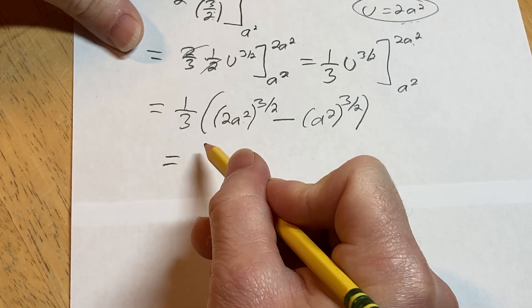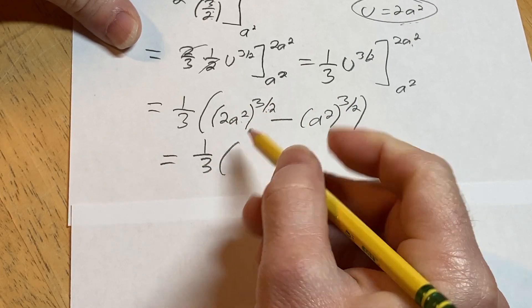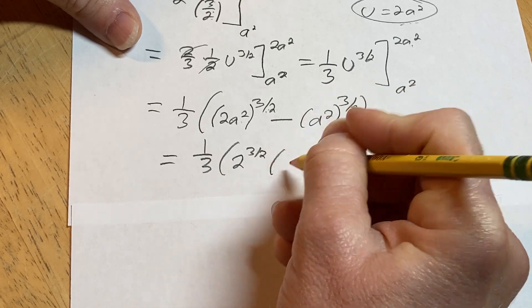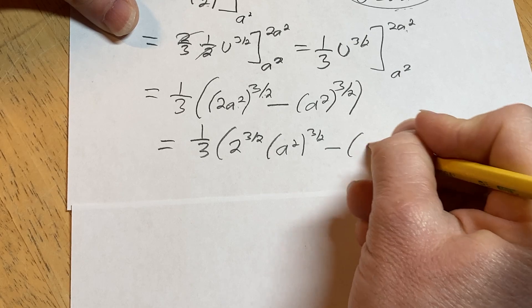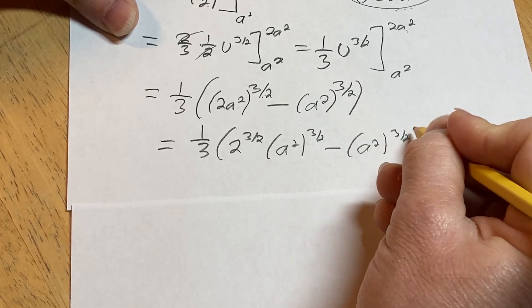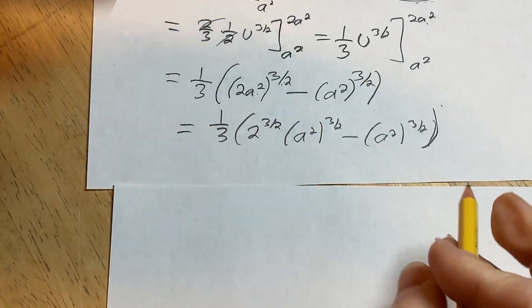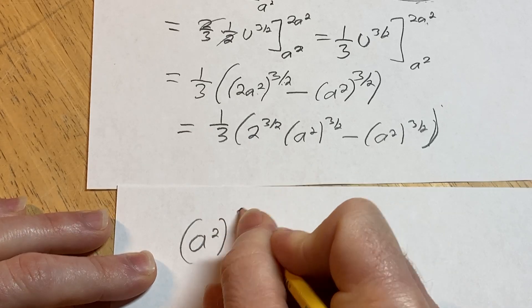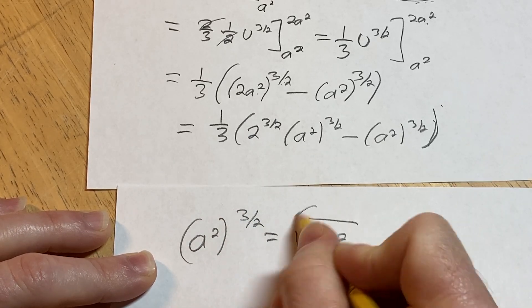So what's happening here? This is equal to 1 third. Basically, you raise each of these to the 3 halves power. So this is going to be 2 to the 3 halves, and then a squared to the 3 halves minus a squared to the 3 halves. Okay, just like that. So what is a squared to the 3 halves? Why am I not simplifying that?